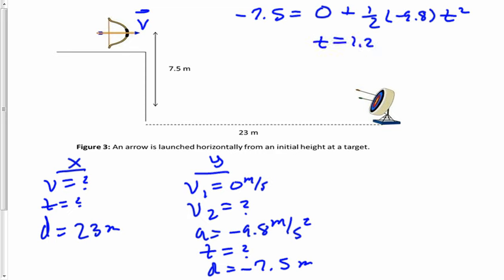Now we can put that in for time, 1.2 seconds, and use our d equals vt equation in the x direction to find velocity. So I have 23 is equal to velocity times 1.2 seconds, and we find that velocity in the x direction is 19 meters per second. So that's our first unknown.